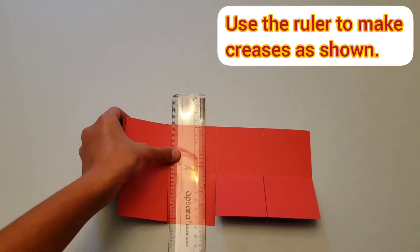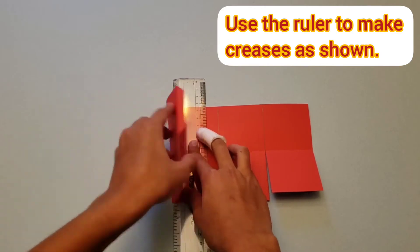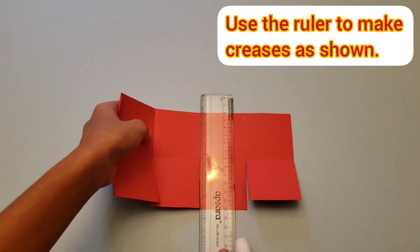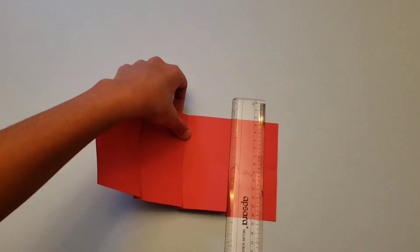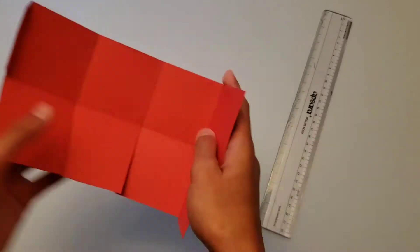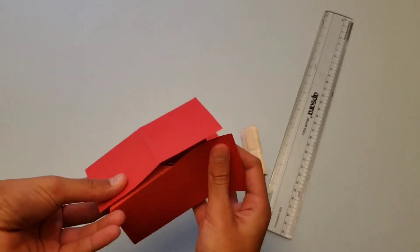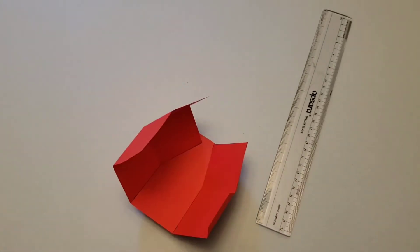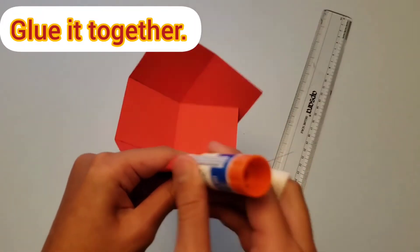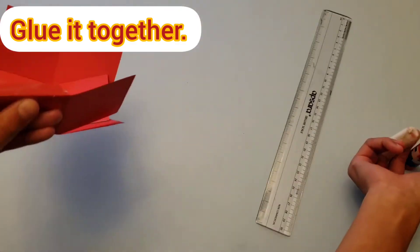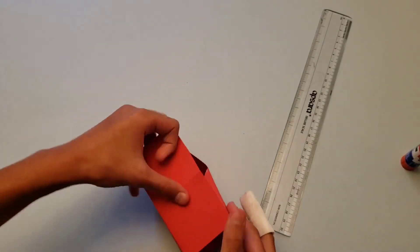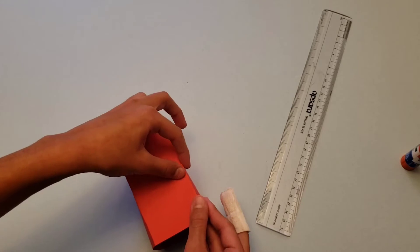Now use your ruler to make creases on all the lines. Now once you've got this, put some glue on the flap on the right side, and glue it to the bottom of the opposite side.